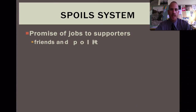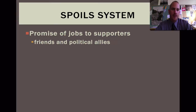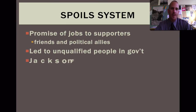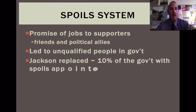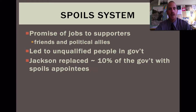One of the first things he introduces is the spoils system. What he's going to do is start to propose jobs for those that support him — either friends or other political allies — turning over government jobs to those that supported him in his campaign. What this does is lead to a lot of people in government who are highly unqualified for their positions, with Jackson replacing approximately 10 percent of the government with these spoils appointees.